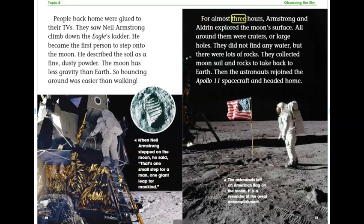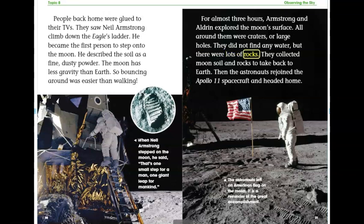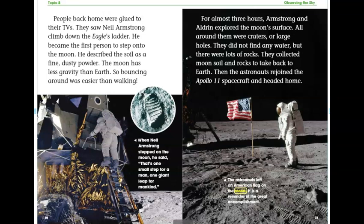For almost three hours, Armstrong and Aldrin explored the moon's surface. All around them were craters, or large holes. They did not find any water, but there were lots of rocks. They collected moon soil and rocks to take back to Earth. Then the astronauts rejoined the Apollo 11 spacecraft and headed home. The astronauts left an American flag on the moon. It is a reminder of the great accomplishment.